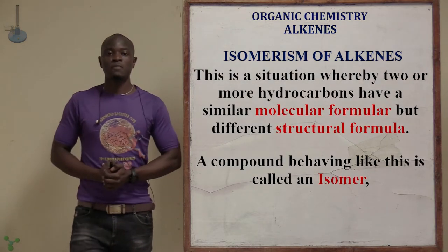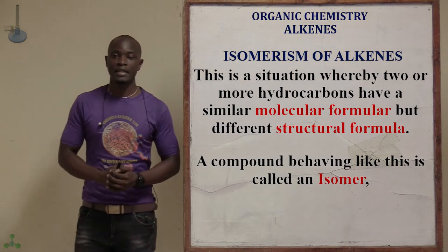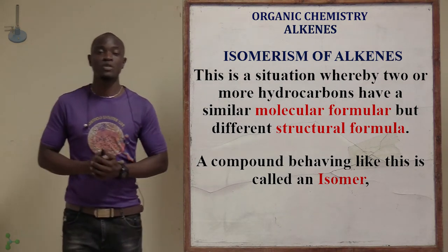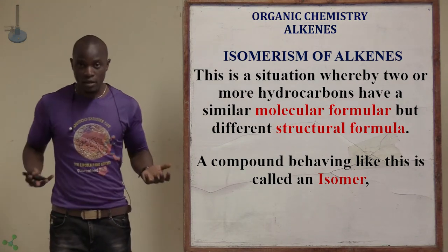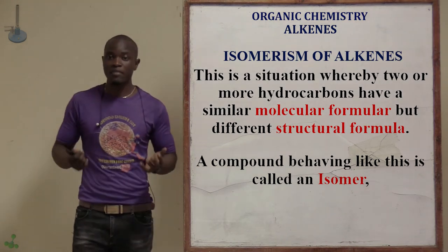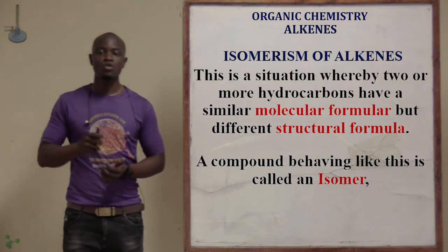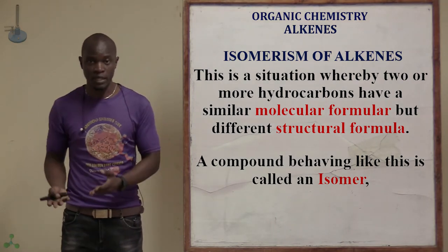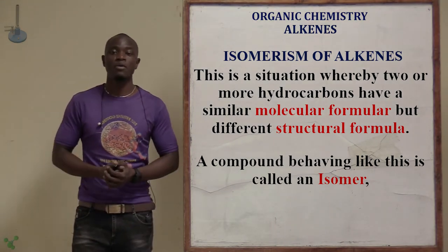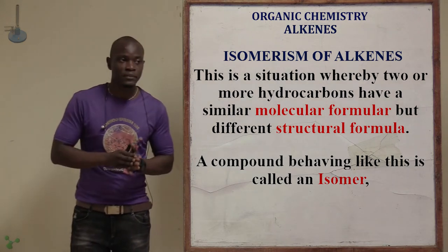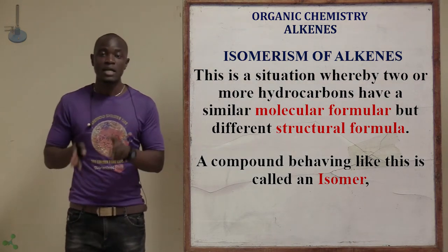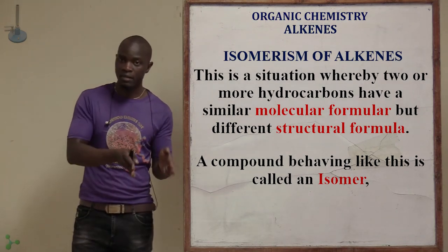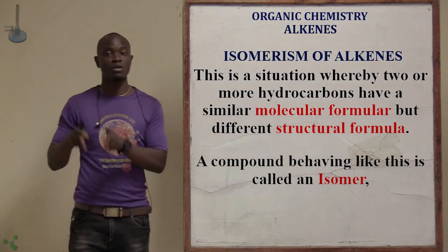Now let's look at isomerism in alkenes. Isomerism is a situation whereby two or more compounds have the same molecular formula but different structural formula — a phenomenon whereby members of a hydrocarbon have identical molecular formulas but different structural arrangements.